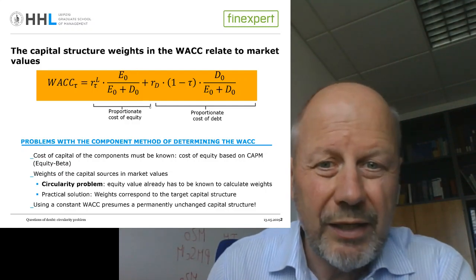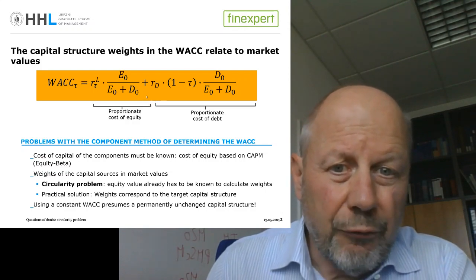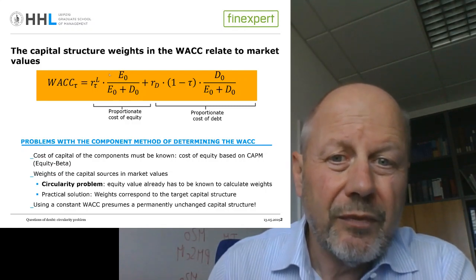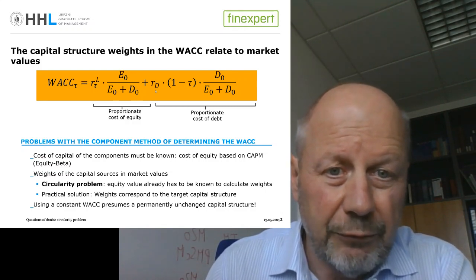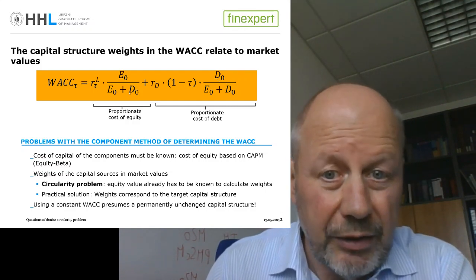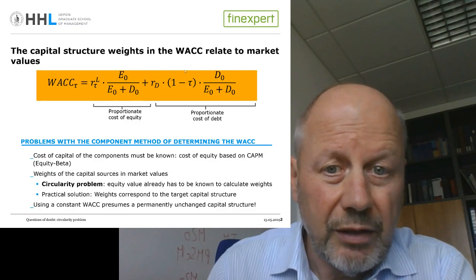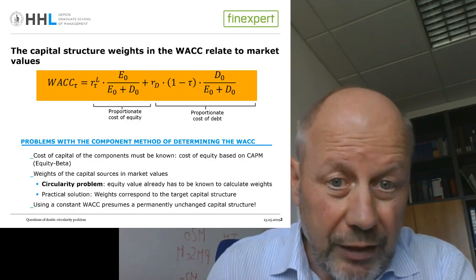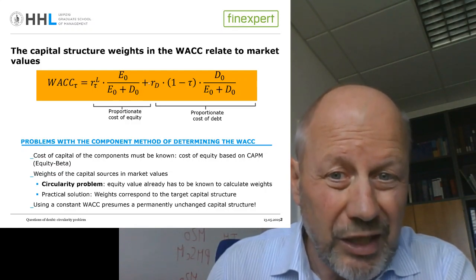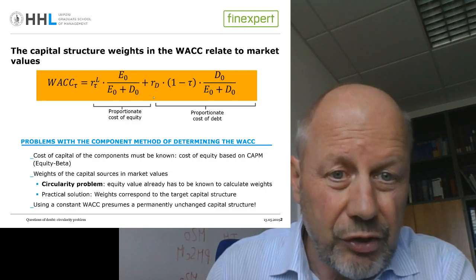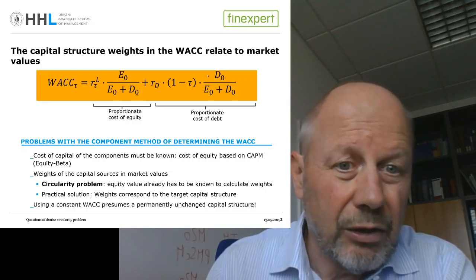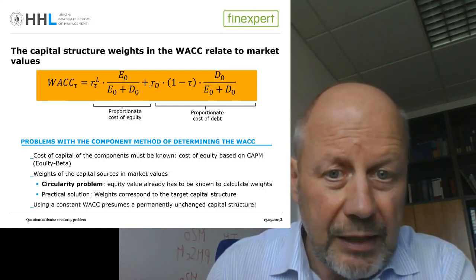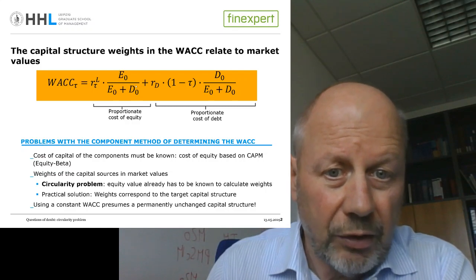There are two ways to tackle this problem. The first one, the simpler one, is a proposal that has been made by practitioners and scientists alike. You start by defining a target capital structure, plug it in, calculate the WACC, do your calculation, calculate the enterprise value, and finally the equity value. Then check on whether, according to the results of the valuation, the leverage ratios and the weights in the capital structure are close to what you assumed at the beginning as the target capital structure.